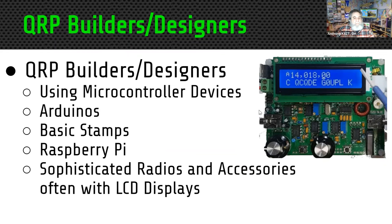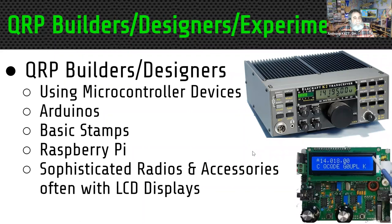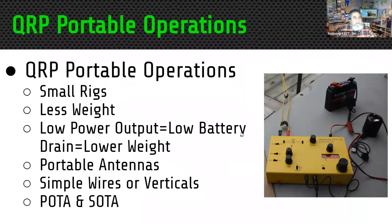Some builders are also designers — they don't only want to build projects, they want to design them. QRP is a great place to experiment at lower cost. Many modern QRP designs incorporate microcontroller devices; this is the circuit board for the QCX from Hans and QRP Labs, incorporating a microprocessor and a digital display — a single-band CW-only radio with a decoder built in. Builders often use Arduinos, Basic Stamps, and Raspberry Pi. This is an example of a kit-built radio — the Elecraft K2, which I've owned and since sold.